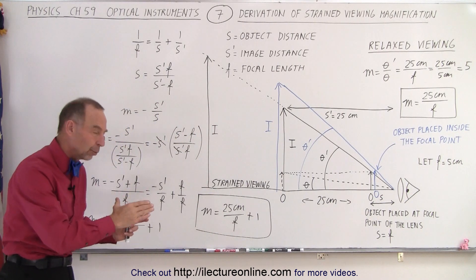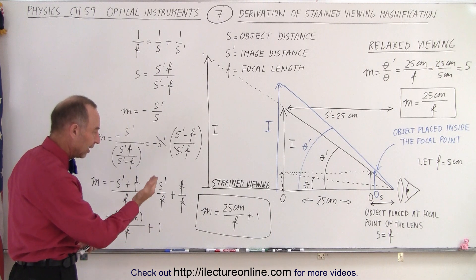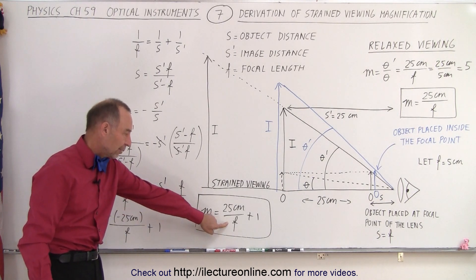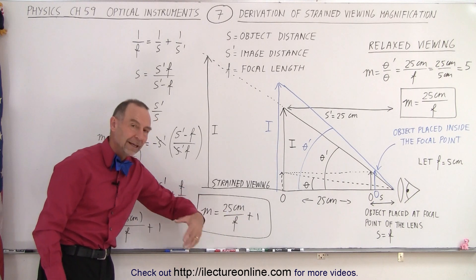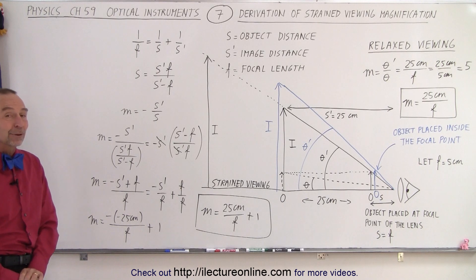But this is the general equation that works for all magnifying glasses, for all lenses that are magnifying glasses. The strained viewing magnification is simply the relaxed viewing magnification plus 1 in all cases. And that's how we derived it, and that shows how it works.